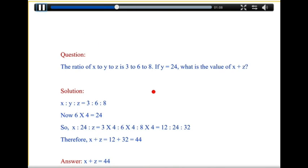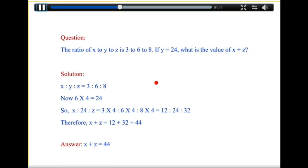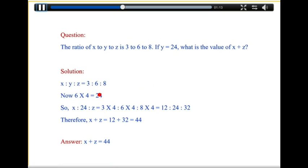The first sentence over here, the ratio of x to y to z is 3 to 6 to 8, we can write as x is to y is to z is equal to 3 is to 6 is to 8.